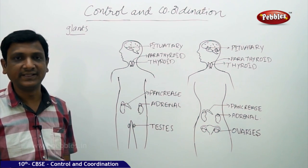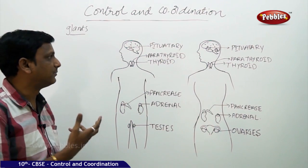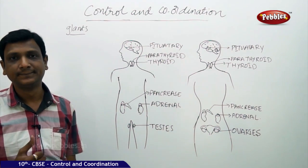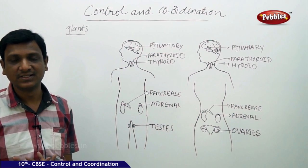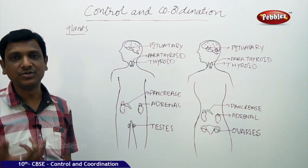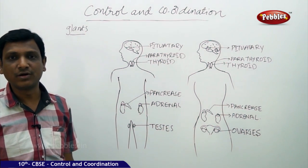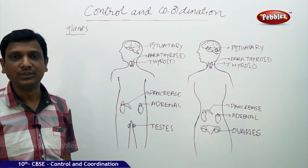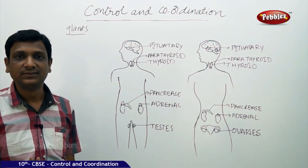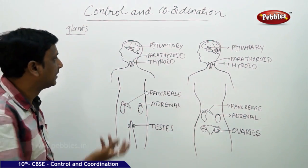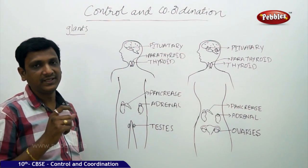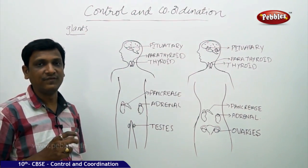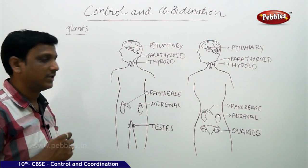If you acquire the genetic character in your DNA, then definitely the pituitary gland will secrete more growth hormone. Even if you eat a lot of food, you may not find proper height if the pituitary is not functioning well. Growth is dependent on the pituitary gland, which secretes growth hormone affecting your height.